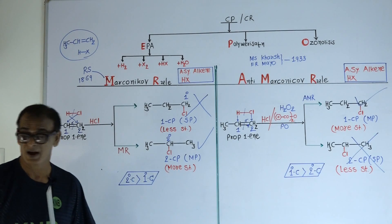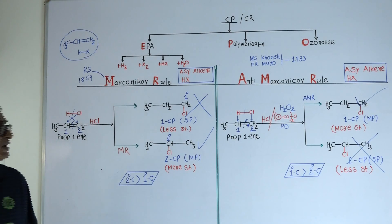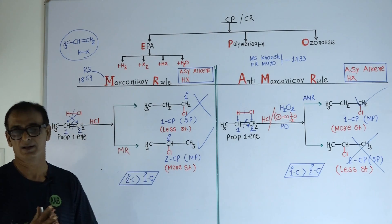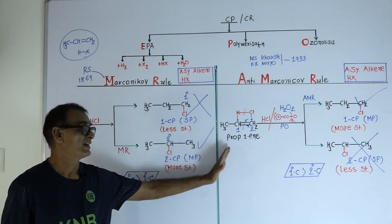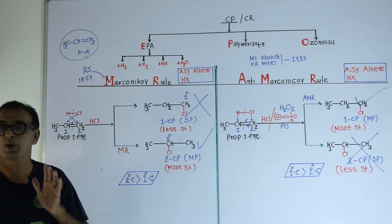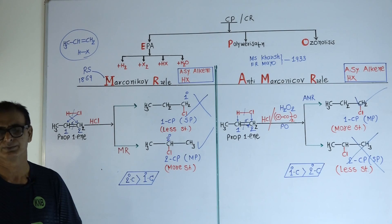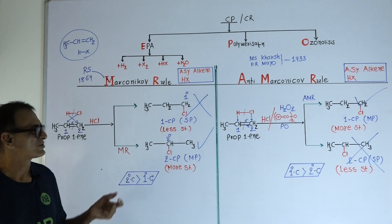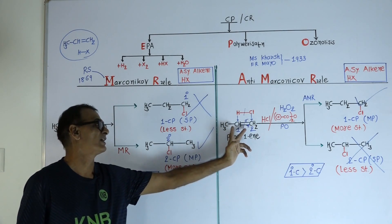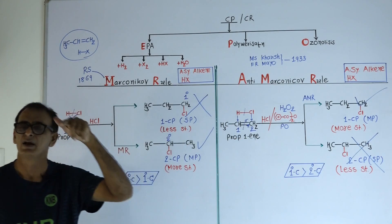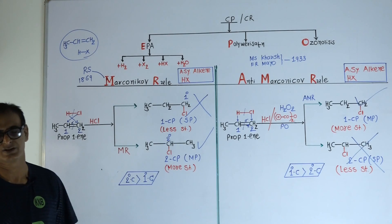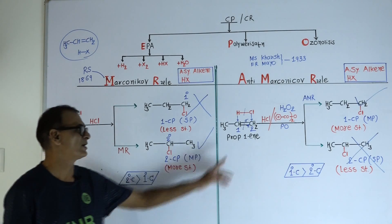To get this product we should follow the Anti-Markovnikov rule. What is the Anti-Markovnikov rule? In the reaction between prop-1-ene and hydrochloric acid in the presence of peroxide compound as catalyst, the positive part of the reagent (hydrogen) will attach with the double-bonded carbon having less number of hydrogen atoms, and chlorine will attach with the carbon atom having more number of hydrogen atoms.